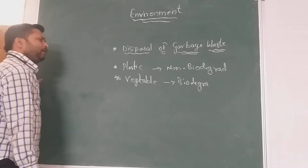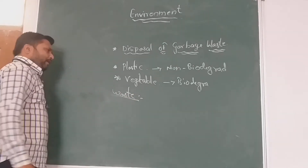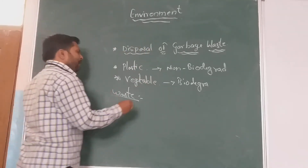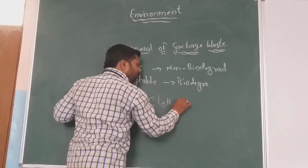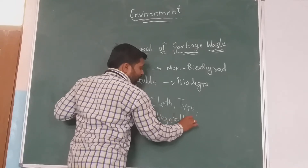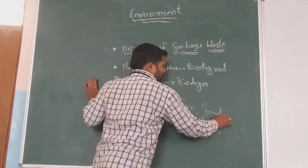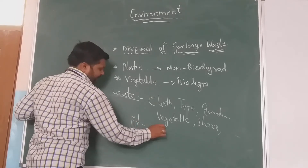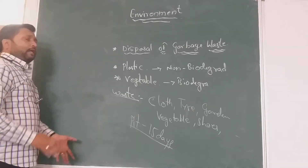We have to collect the certain waste which is going to be generated or produced from your home, and put it in a container. In your home, the waste may be in the form of cloth, a tire, vegetable waste, shoes, garden waste — whatever waste is going to be produced from your home, collect it and dump it in. After 15 days, observe whatever changes are there — which substances decompose and which do not.